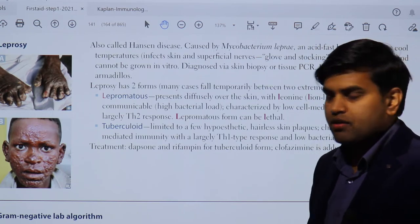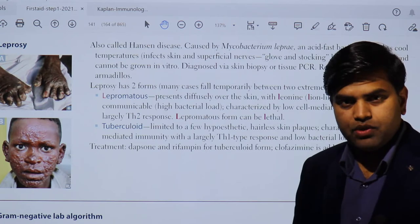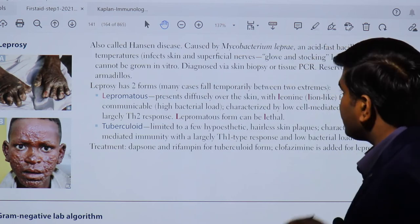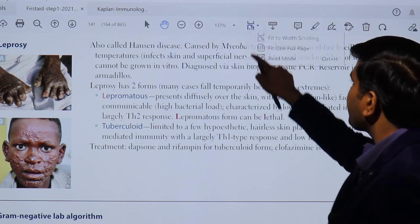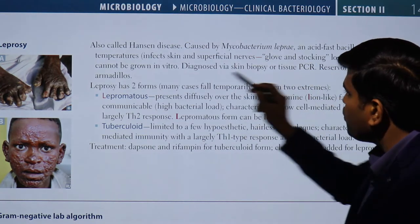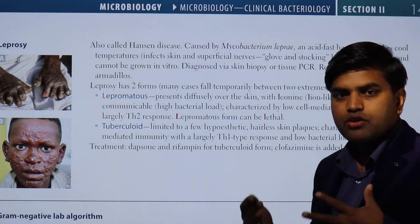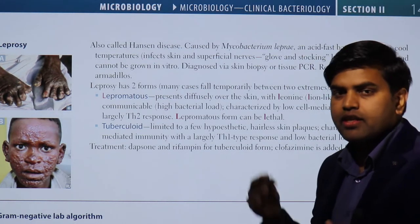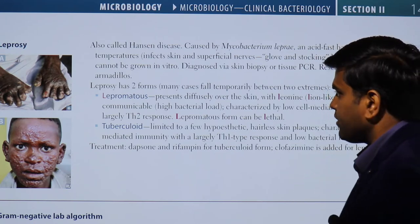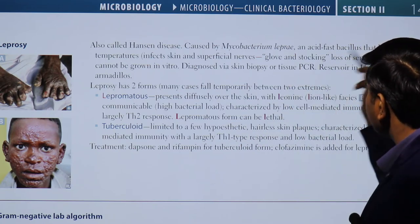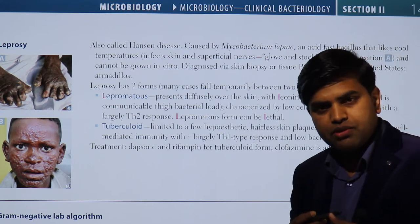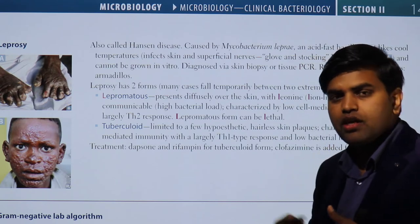Since it was identified by Hansen, it is also called Hansen's disease. It is caused by Mycobacterium leprae, an acid-fast bacillus that likes cool temperatures, so it tends to infect cooler parts of the body. Like Mycobacterium tuberculosis, Mycobacterium leprae is also an acid-fast bacillus, as is Nocardia species.